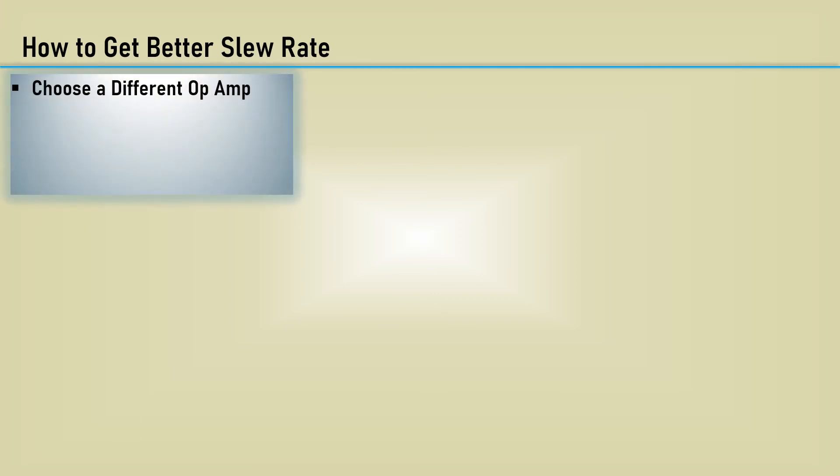How can we do better? Well, we can choose a different op amp. I mentioned how this compensation capacitor was the major contributor to the slew rate dilemma. Some op amps are available uncompensated. This requires the designer to select an appropriate external compensation capacitor. These op amps have not gained much popularity since most users don't want to bother with the extra effort to make sure it's stable. There are also decompensated op amps that have a moderate amount of compensation inside but does require external capacitors.